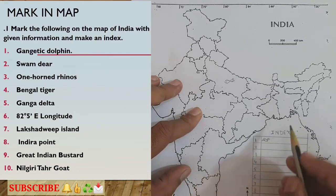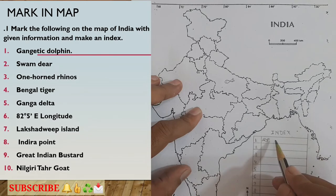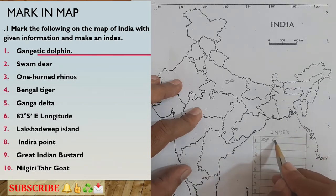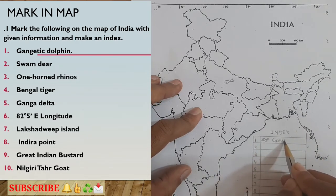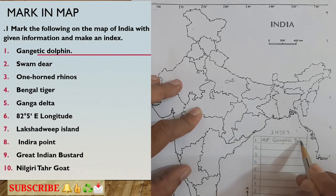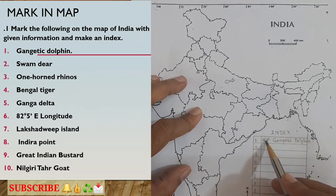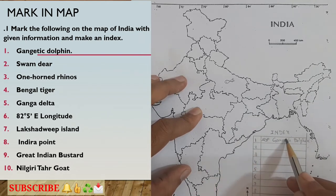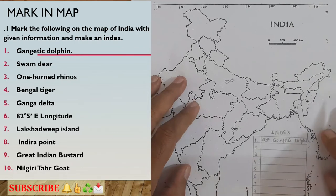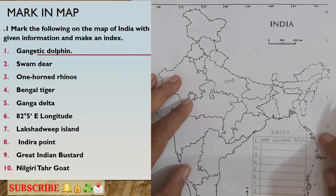In the index, we draw the fish symbol and in front of it we write 'Gangetic Dolphin.' This means that wherever this sign appears, the Gangetic dolphin is seen. This is how the first index entry is completed.